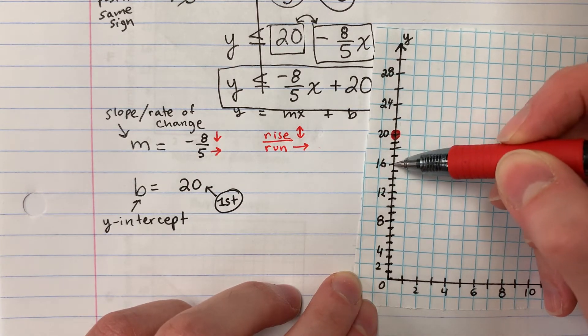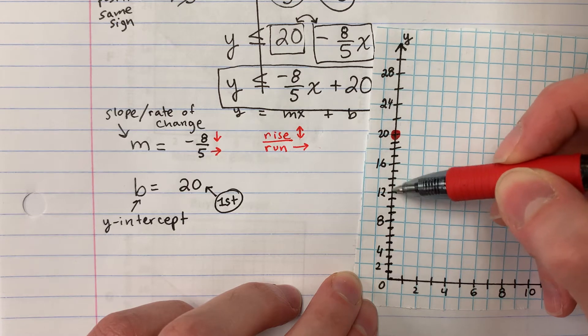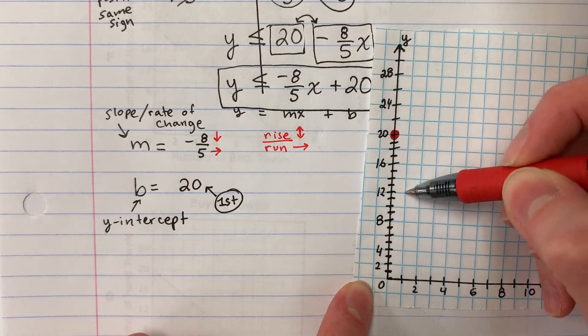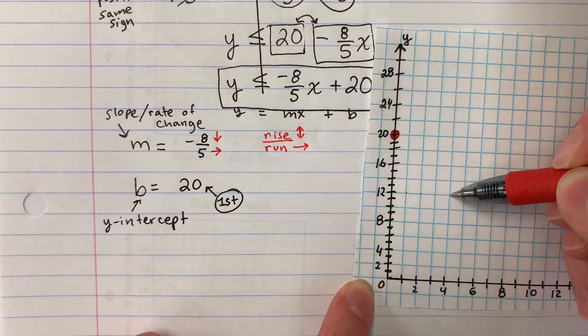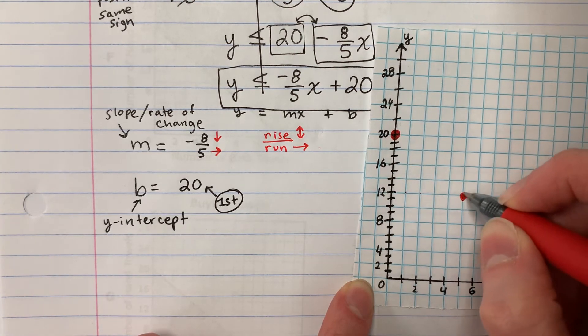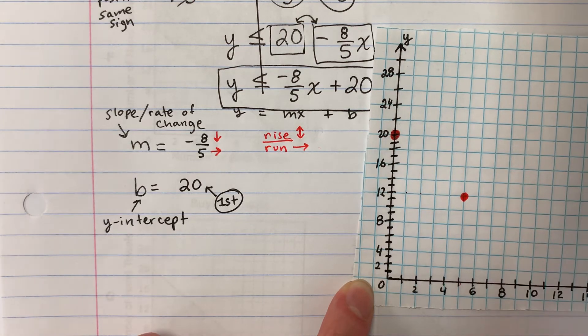So 8 spaces down. 1, 2, 3, 4, 5, 6, 7, 8, and 5 right. 1, 2, 3, 4, 5. Do you see? It's 5. That's a pattern of 1 there.